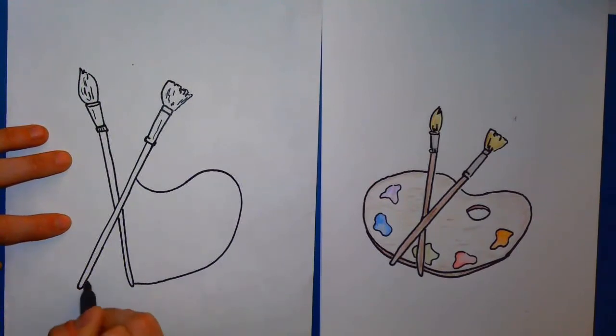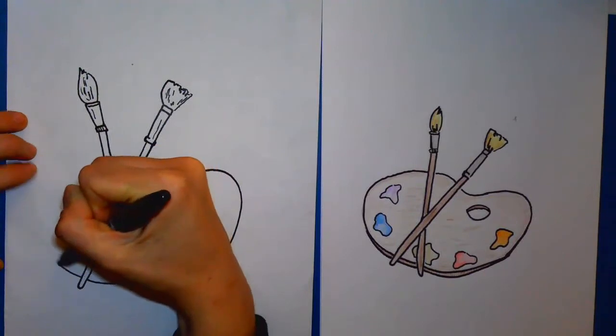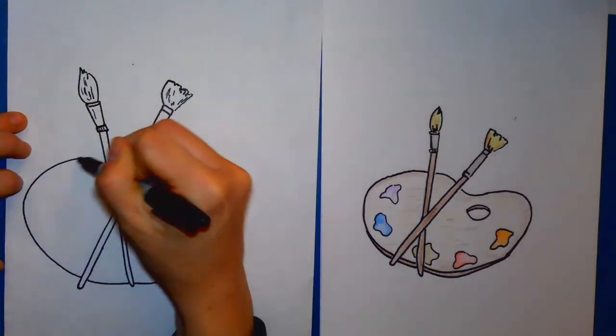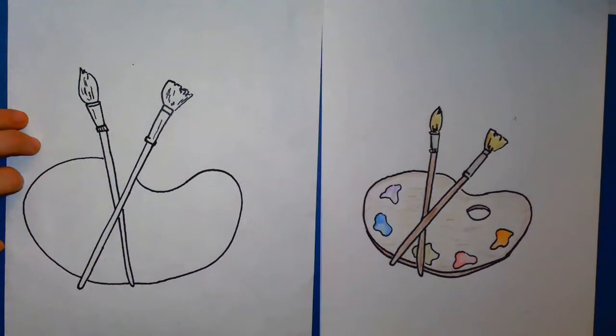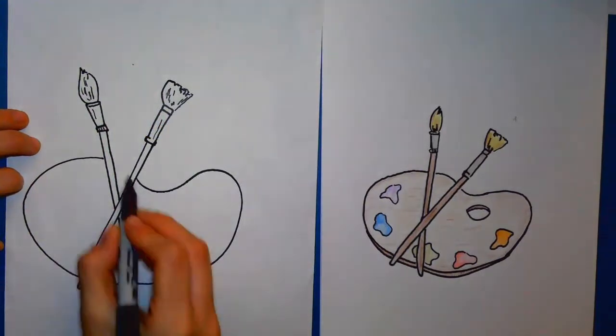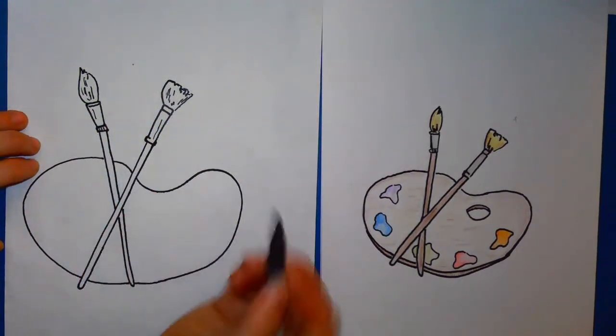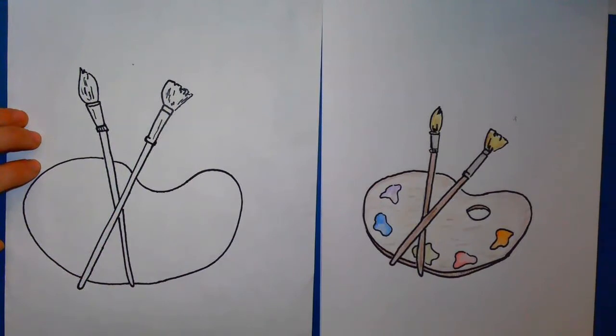And back to those two brushes. We're going to curve up and around for those brushes, and then connect it back. So now we have the outline.